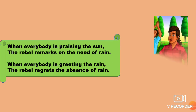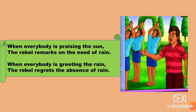When everybody is praising the sun, the rebel remarks on the need for rain. So when everybody says the sun is very good for health and worships the sun, the rebel says there is a need for rain — that rain is the best and more important than the sun.